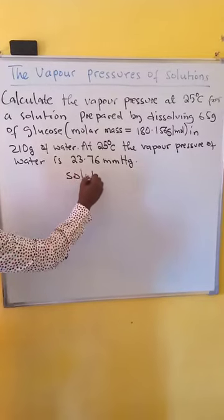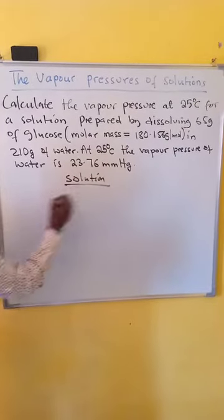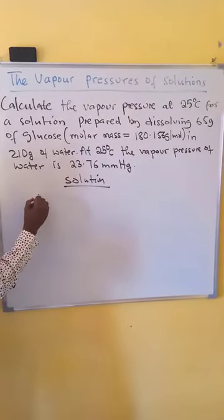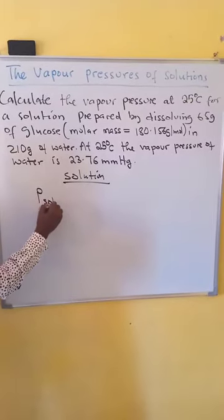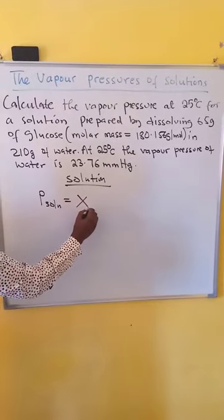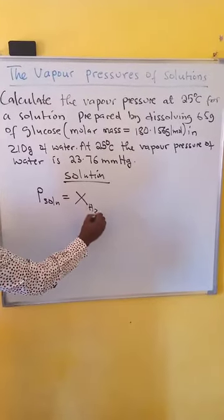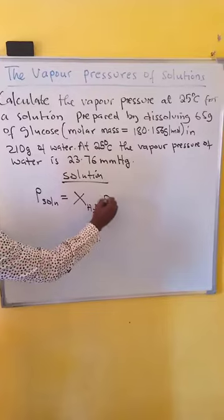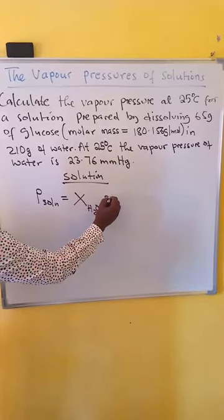Solution: we know that vapor pressure of a solution is given by mole fraction of the solvent, in this case, the solvent is water, times the vapor pressure of water.